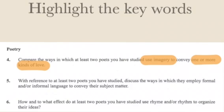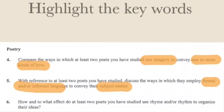The second question asks: 'With reference to at least two poets you've studied, discuss the ways in which they employ formal and/or informal language to convey their subject matter.' And the last question: 'How and to what effect do at least two poets you've studied use rhyme and/or rhythm to organise their ideas?'